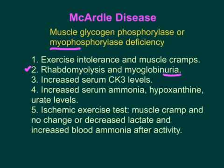Because skeletal muscle is breaking open, there are elevated levels of CK-MM (CK3). Serum ammonia levels are increased because amino groups of amino acids are converted to ammonia in the liver. Hypoxanthine and urate levels are also elevated upon activity.